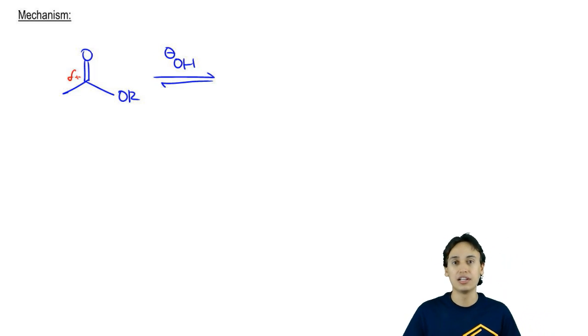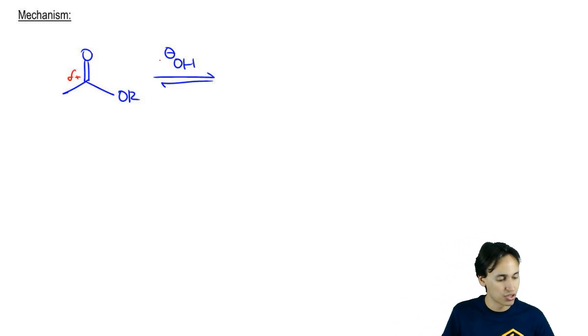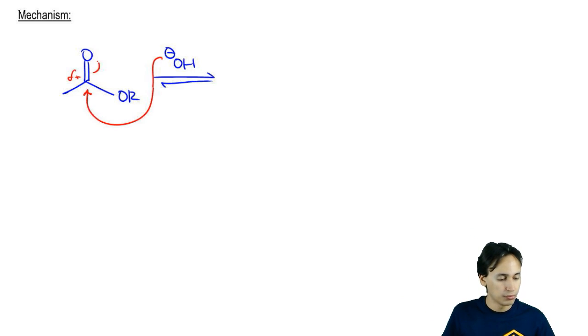I don't need to do a protonation and draw a resonance structure to make that carbon active. It's already active because I've got a negatively charged nucleophile. So boom and boom, I'm going to get a tetrahedral intermediate. We've seen this before.